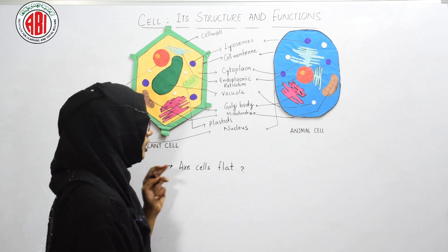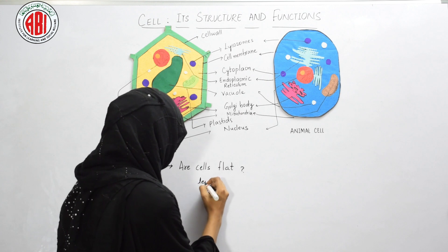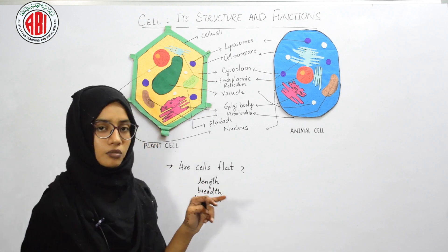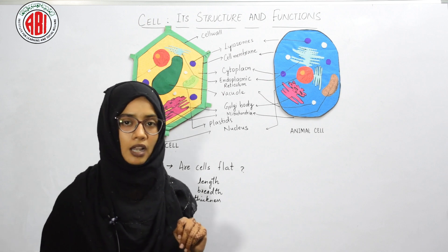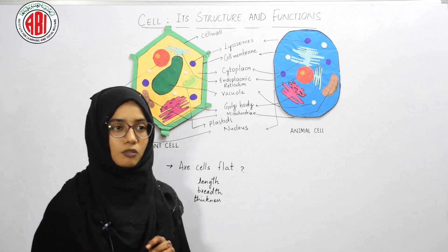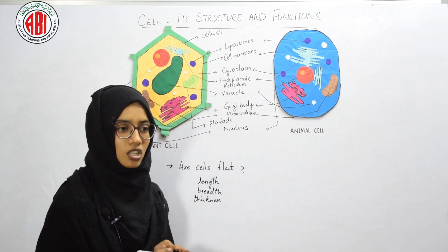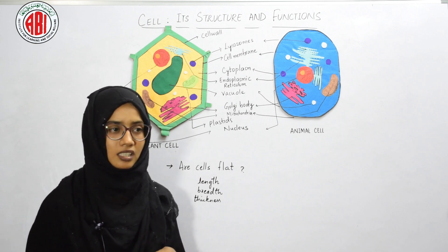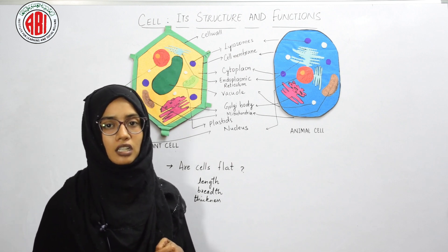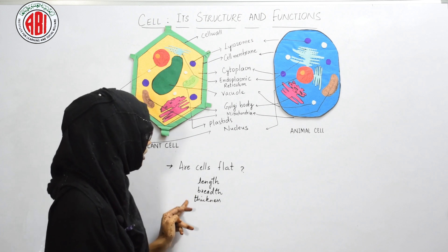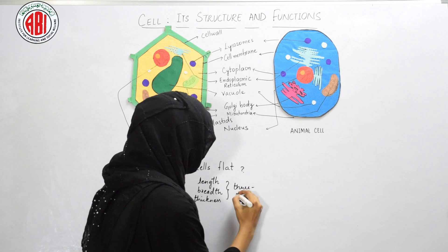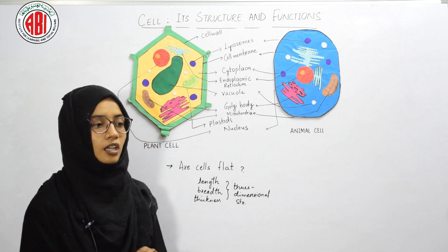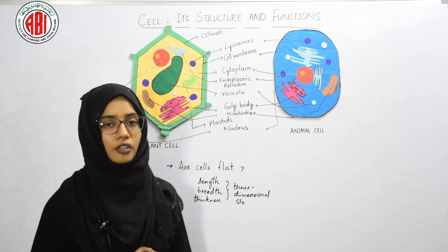The cell shows length, breadth, and even thickness. We can observe the length and breadth of a cell easily under the microscope, but we cannot easily observe the thickness. One method is to slightly change our viewing position or look at the cell wall while observing. Another way is by reducing the intensity of the light, which allows us to clearly see the thickness and the three-dimensional structure of the cell.